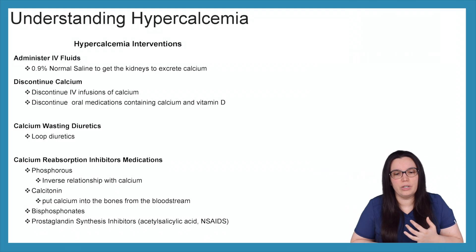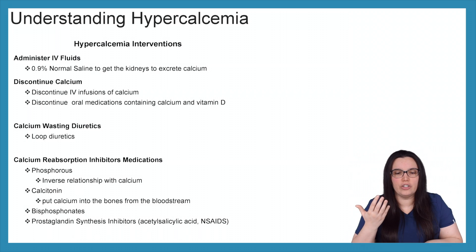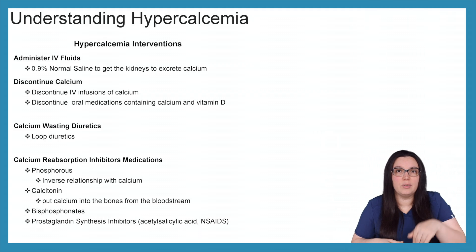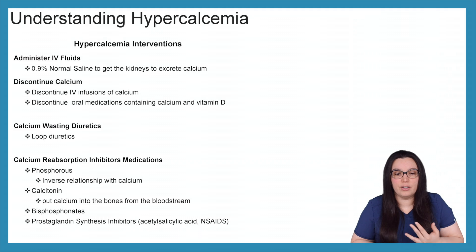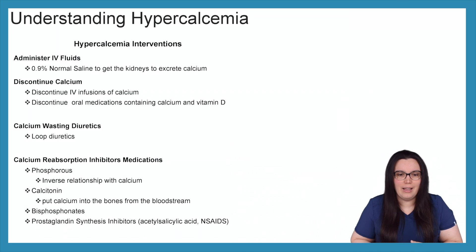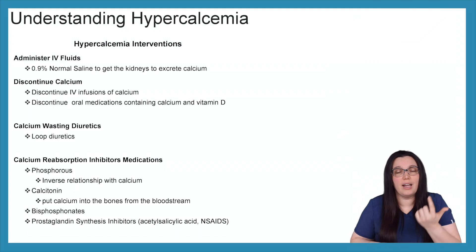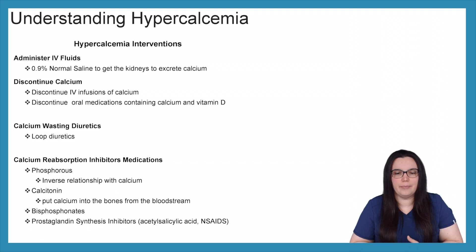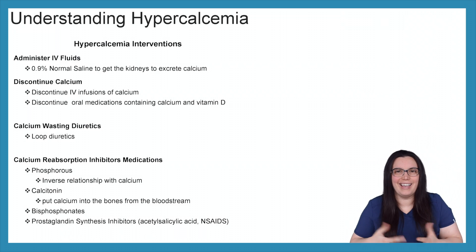We can give phosphorus, because as we know they have a very inverse relationship — if phosphorus goes up, calcium is ultimately going to go down. Calcitonin will help put calcium into the bones from the bloodstream, but we really have to determine how bad the hypercalcemia is before we give calcitonin, to make sure we're not already experiencing excessive bone pain. Bisphosphonates — again, if you give bisphosphonates it's going to bring phosphorus up and calcium is going to go down. And then lastly, you can give things such as NSAIDs and acetylsalicylic acid — they're really prostaglandin synthesis inhibitors that help regulate calcium within our bloodstream.